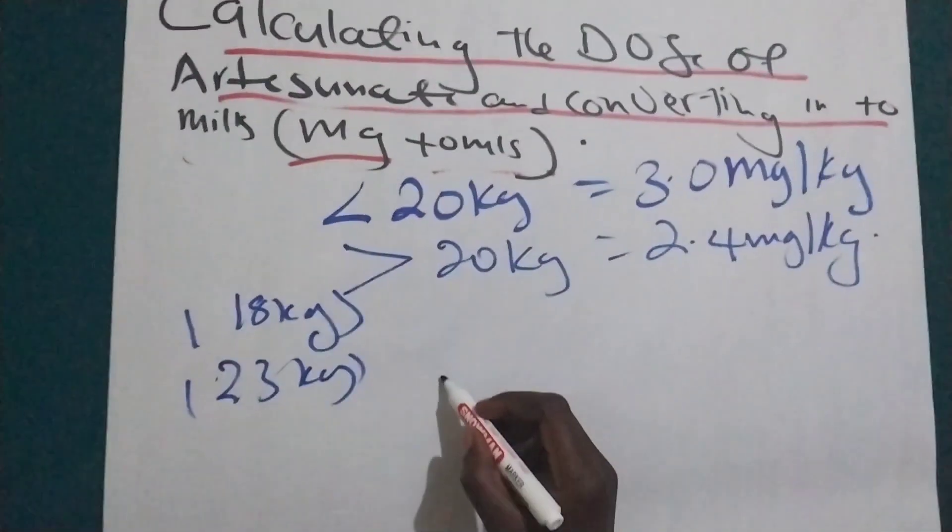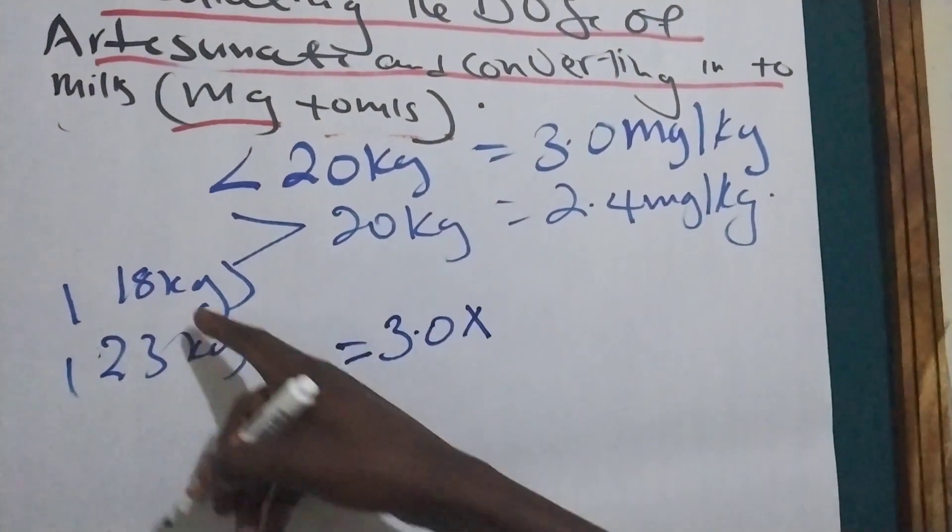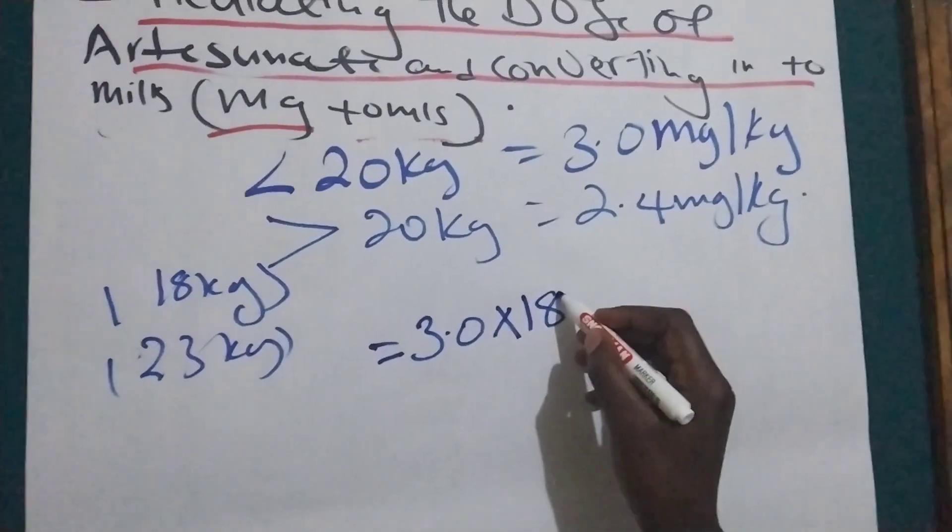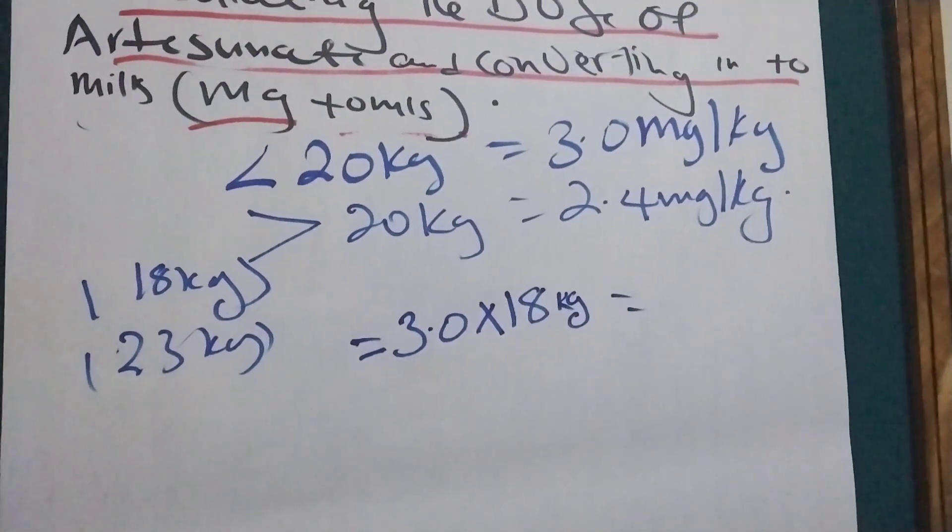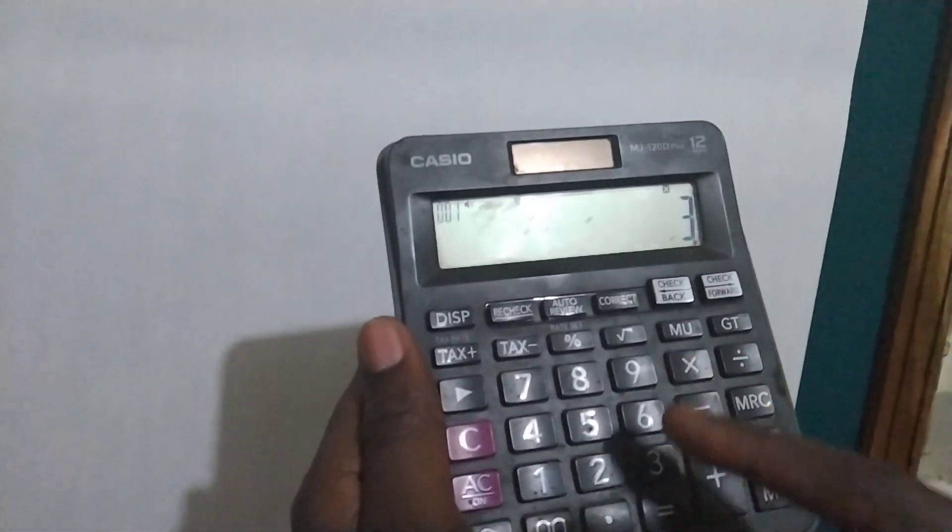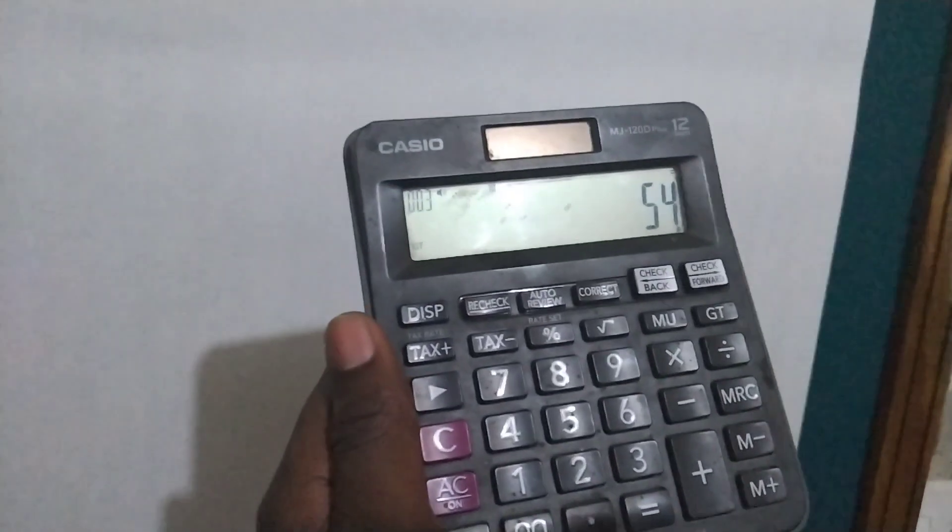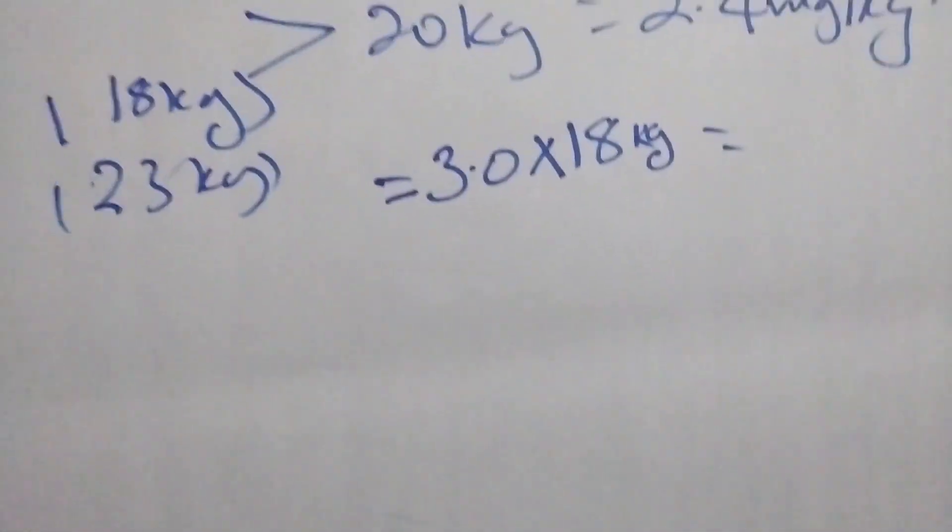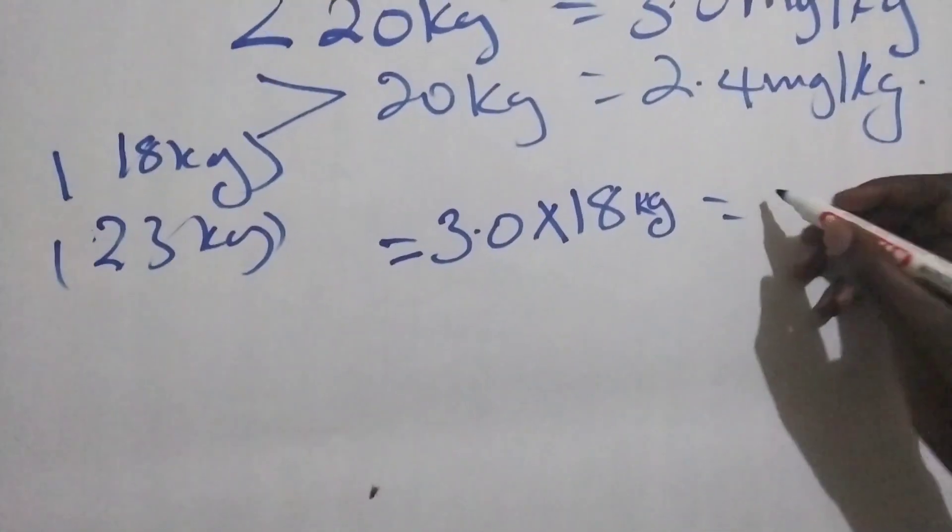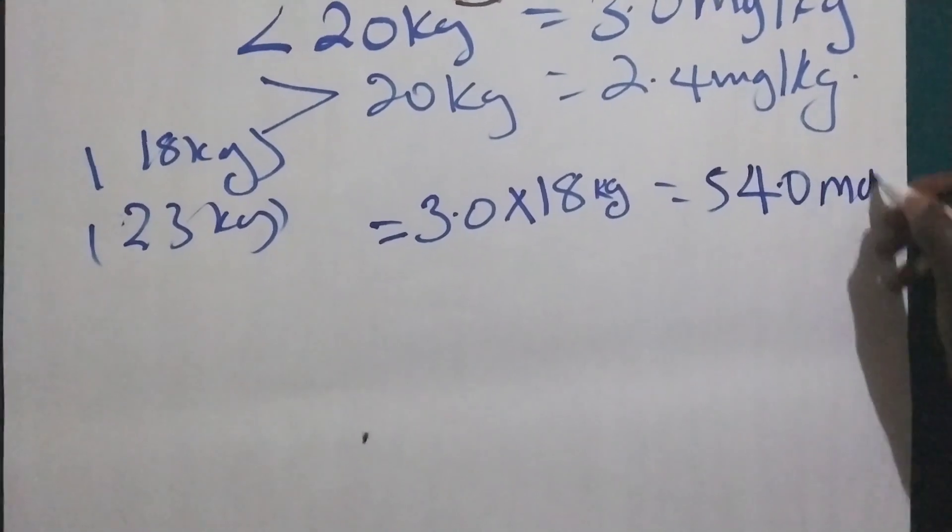One, the easiest way we will put 3.0 times kilogram body weight, that is 18 kilograms. What will we get? 3.0 times 18. So we will get 54.0 milligrams.